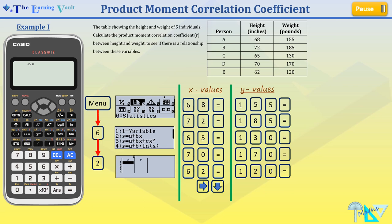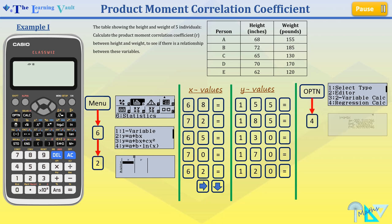When we get to 120 and we press that equals sign, the next step is to press option on our calculator. And it comes up with that image, the information. The next thing we need to press is the number 4 for our regression calculation.